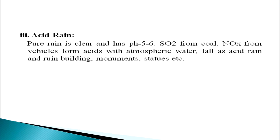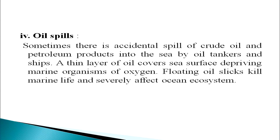Next is acid rain. Pure rain is clear and has a pH of 5.6. Sulfur dioxide from coal and oxides of nitrogen from vehicles form acids with atmospheric water, which fall as acid rain and ruin buildings, monuments, and statues. Oil spill is the next backlash. Sometimes there is an accidental spill of crude oil and petroleum products into the sea by oil tankers and ships. A thin layer of oil covers the sea surface, depriving marine organisms of oxygen. Floating oil slicks kill marine life and severely affect the ocean ecosystem.